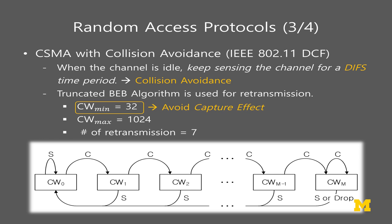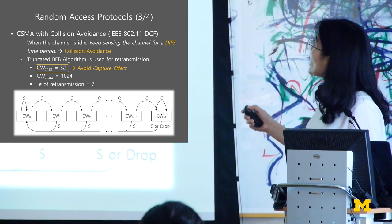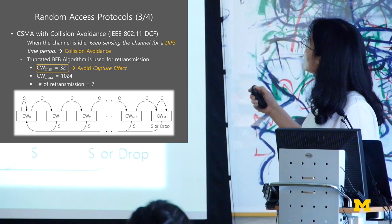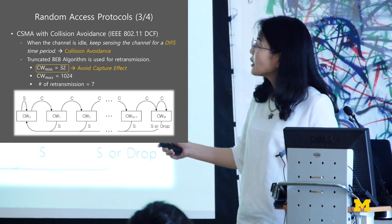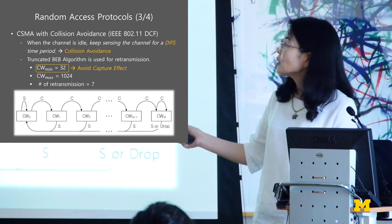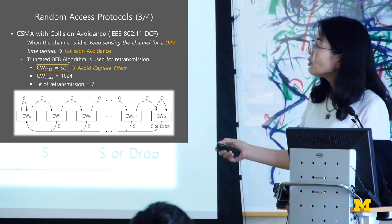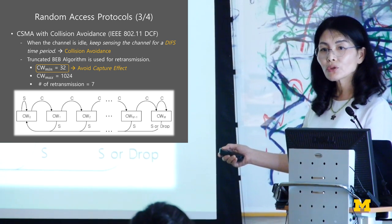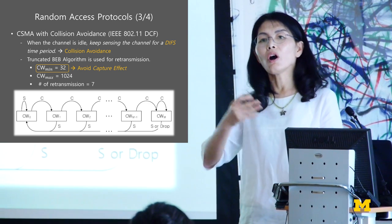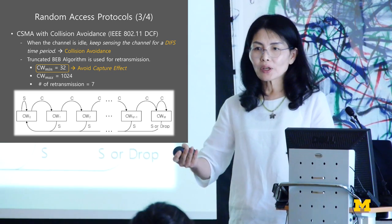Later we improved this for Wi-Fi, which cannot use collision detection, so instead it uses collision avoidance — the same mechanism but listening to the channel a little longer. For Wi-Fi, nodes listen for DIFS time. The same truncated binary exponential backoff algorithm was used for retransmission, but instead of a minimum contention window size of 1, we used 32. That way we were able to avoid the capture effect — not entirely, but fairly.